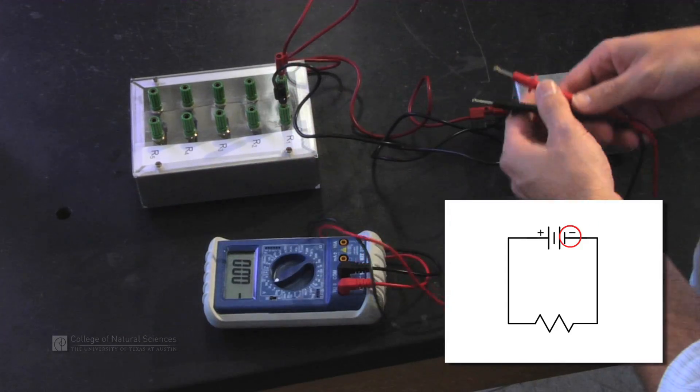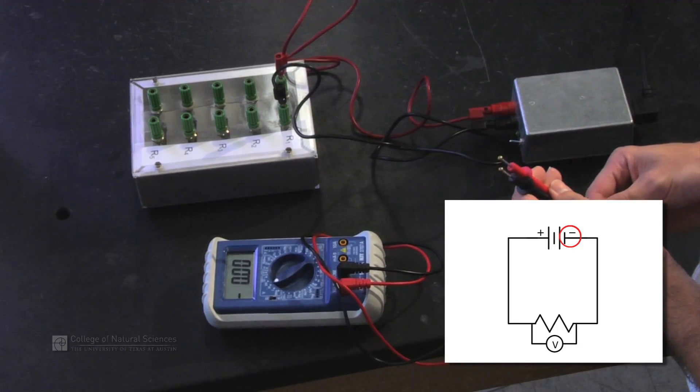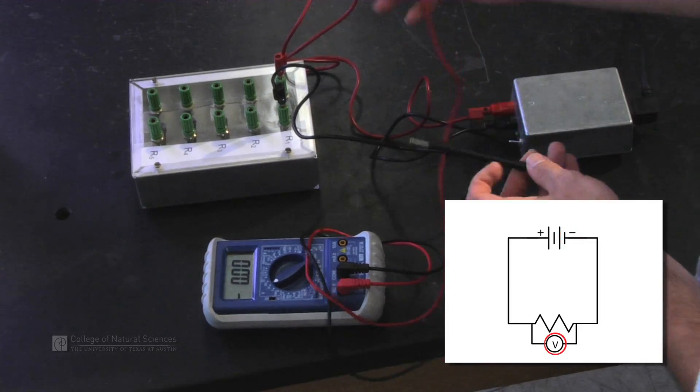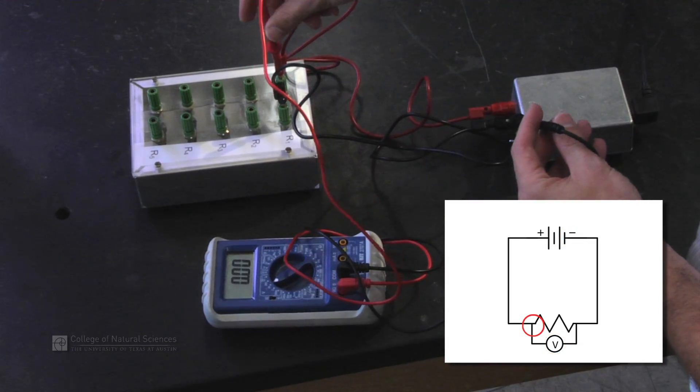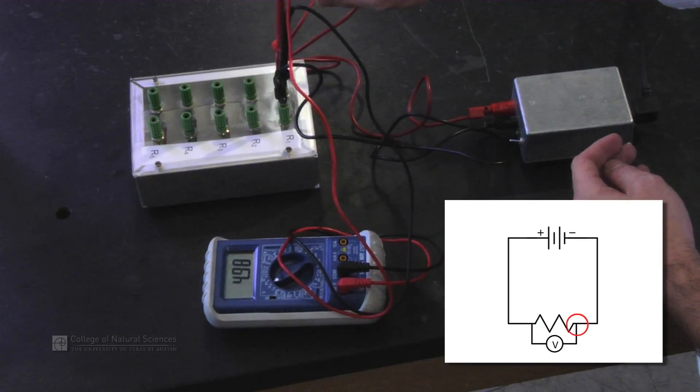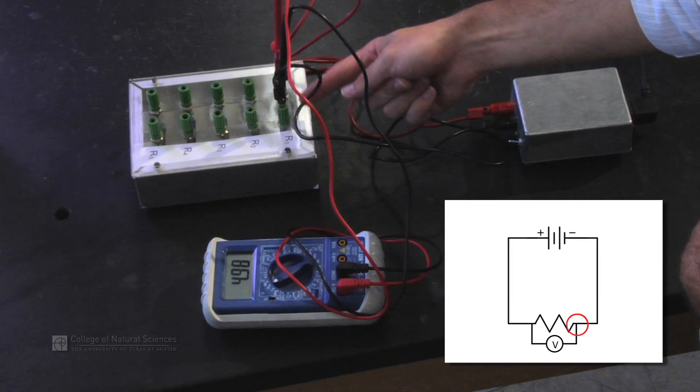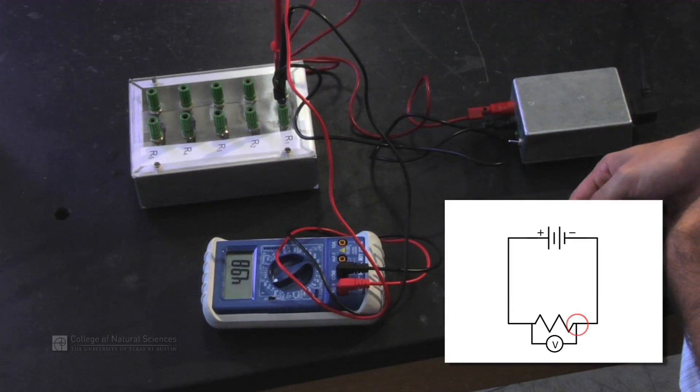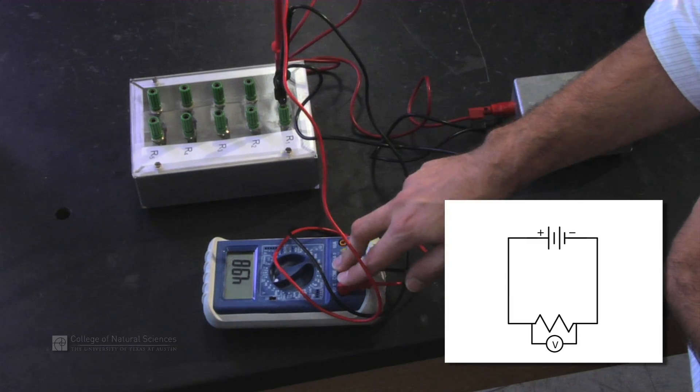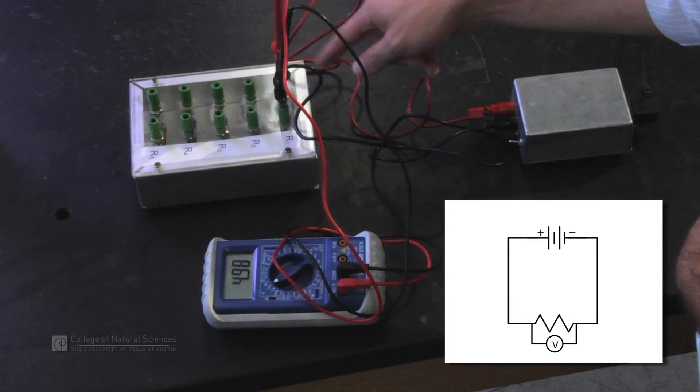Take our two probes and we're going to connect, if we want to measure the voltage across the resistor, we take our two probes and connect one probe to one side of the resistor, the other probe to the other side of the resistor, and now we're measuring the voltage across this resistor. If you notice, the digital multimeter is connected in parallel to the resistor.